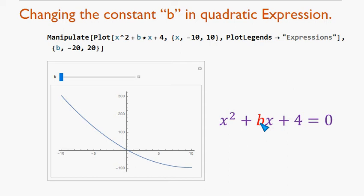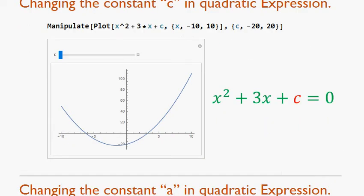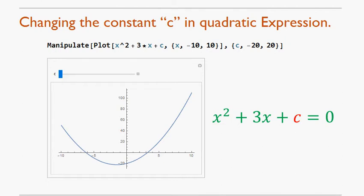The next equation is x² + 3x + c. In this, we have taken range of c again from -20 to +20. And see what happens to this equation and how does the graph move in the Cartesian plane.